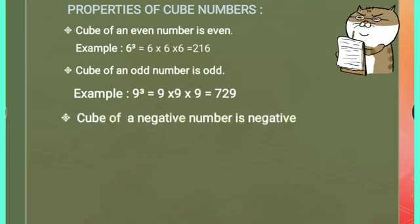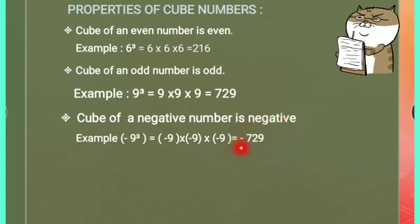The cube of a negative number is negative. For example, (-9)³ = -729, so the cube of a negative number is negative. And the cube of a positive number is positive — as you can see, this number is positive and its cube is also positive.